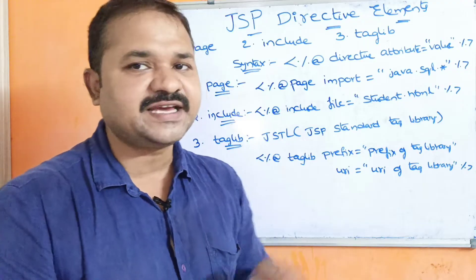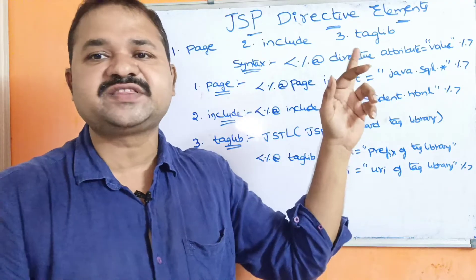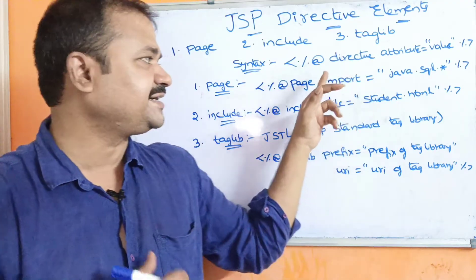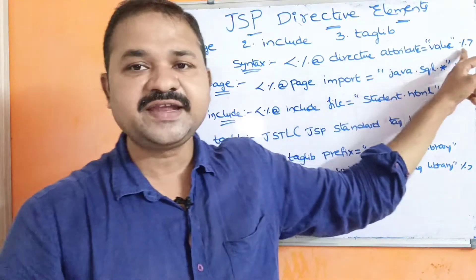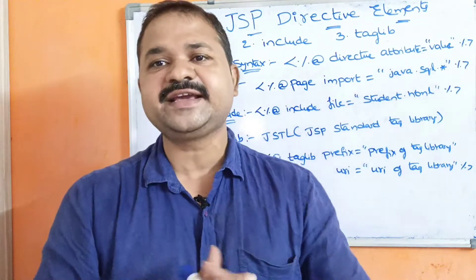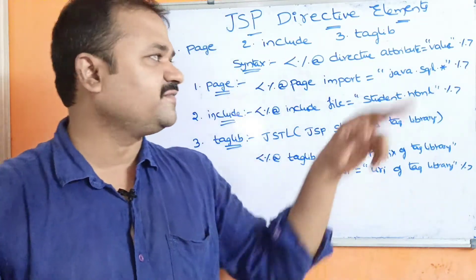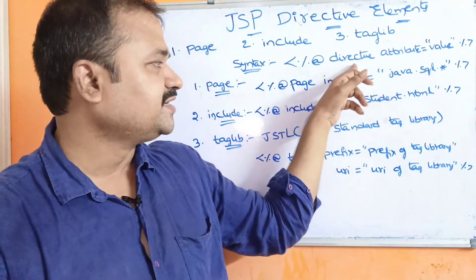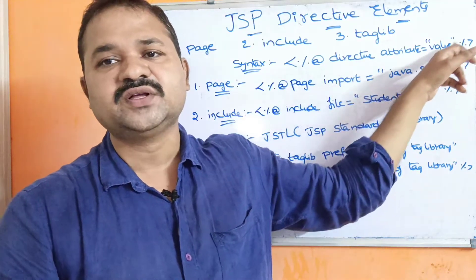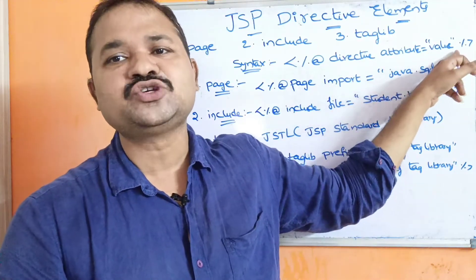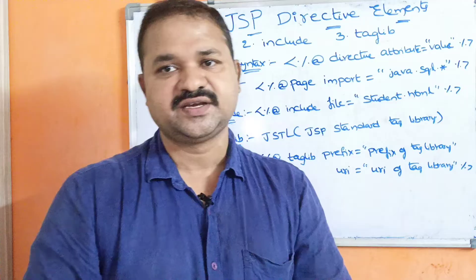To recap the syntax: any directive starts with less-than percentage at-rate and ends with percentage greater-than. In between, we write the directive name and the attribute, where the value is placed within double quotations.